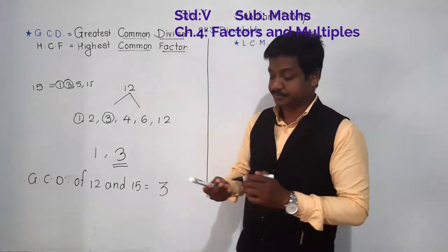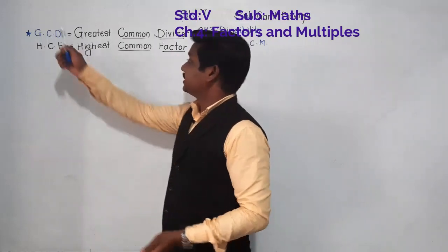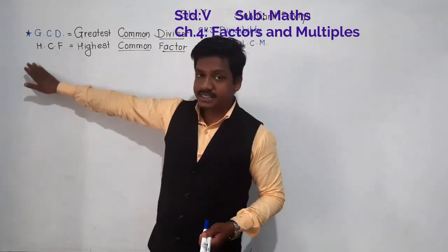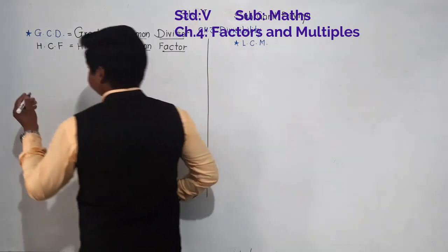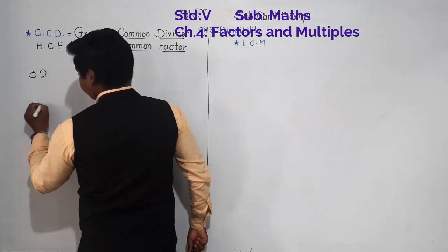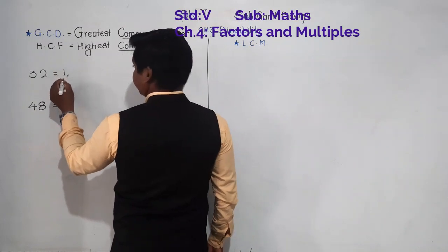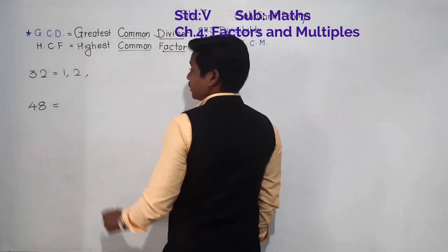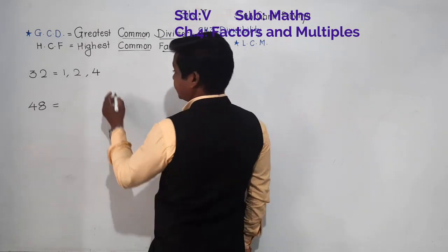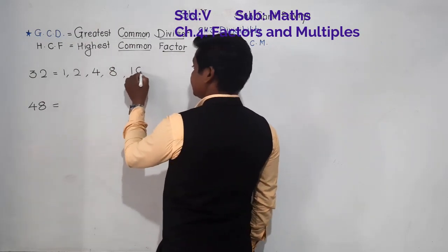This is the concept of GCD. Now I will show you one more example: GCD of 32 and 48. Divisors of 32 are 1, 2, 4, 8, 16, and 32 — since 32 is divisible by 2 (even), divisible by 4 (4 eights are 32), and by 8 (8 fours are 32), and also by 16 and 32 itself.